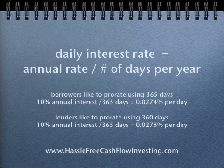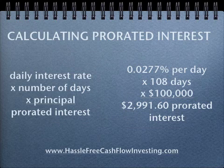A lender will often use 30 days per month, so they'll say you've had 10 months and 5 days — that's 10 months times 30, which is 305 days. Both methods are acceptable in the industry. For example, using a 10% annual rate divided by 360 days gives 0.0277% per day. If a loan was outstanding for 108 days on a $100,000 loan, the prorated interest would be $2,991.60. That's how you convert an annual rate to a daily rate and calculate prorated interest.